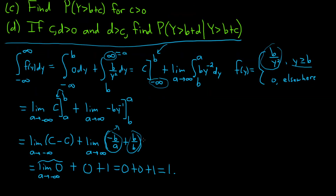Part B: find big F of y. By definition, the CDF is written as the improper integral from negative infinity to y of f of t dt. We'll use this formula to find big F. When integrating from negative infinity to y, it depends on what y is, so let's look at cases.